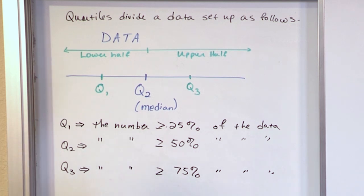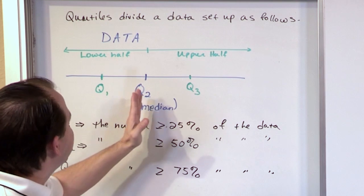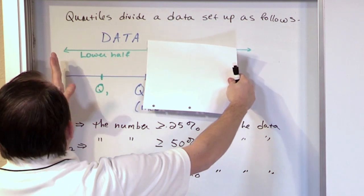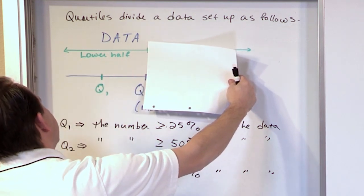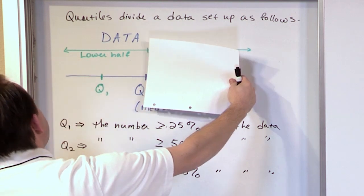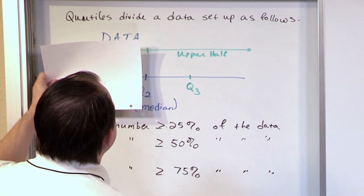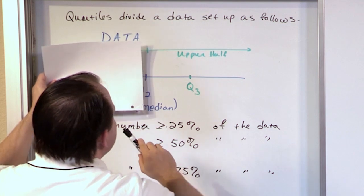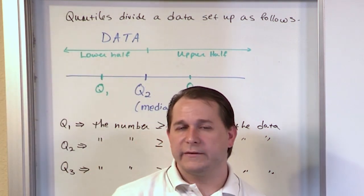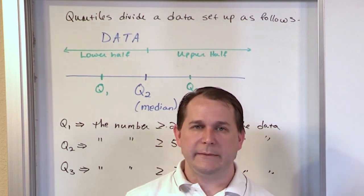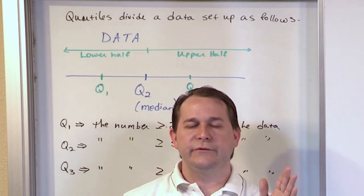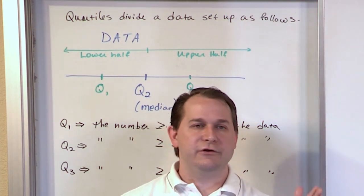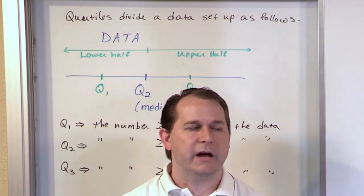And the last thing I want to point out is Q2, as I've already said, is the median of your data set. In order to find Q1, really what you end up doing is looking at the data only from the beginning up until the median, and you find a new median in the middle, and we call that Q1. In order to find Q3, we only look at data from the median or Q2 up until the end. We find a new median here, we call it Q3. So really, finding quartiles is just an exercise in finding medians. First you find Q2, which is the median of the whole thing. That chops your data set into upper half and lower half, and then you just find the median of the upper and the median of the lower, and those are your quartiles.